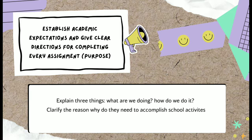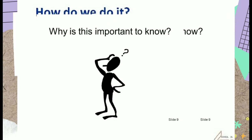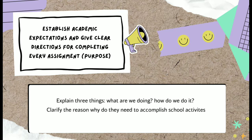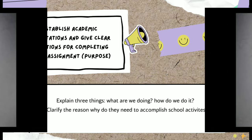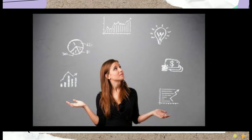Third is purpose. Teachers should establish academic expectations and give clear directions for completing every assignment, because students want to know three things: What are we doing? How do we do it? And why is this important? Teachers should inculcate the purpose of the homework so students can be motivated in accomplishing it. Teachers should also ensure that students know the procedures for accomplishing and training in the tasks, whether they are individual or group efforts, so that the purpose of each assignment is clear for both the student and the teacher.